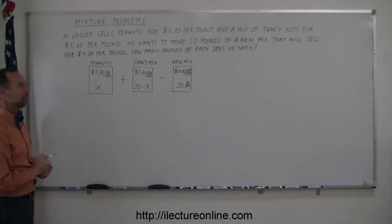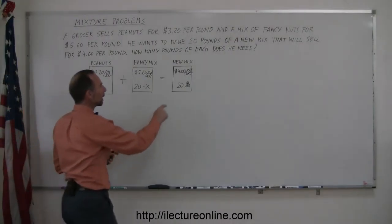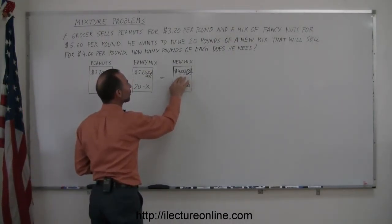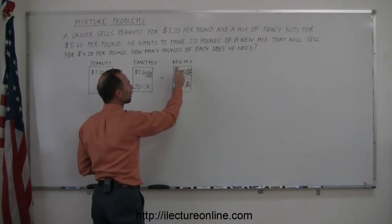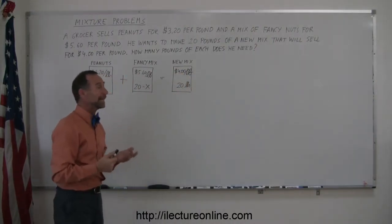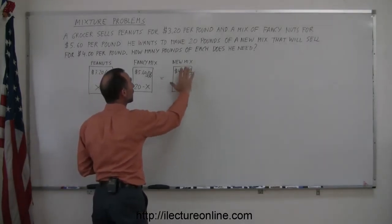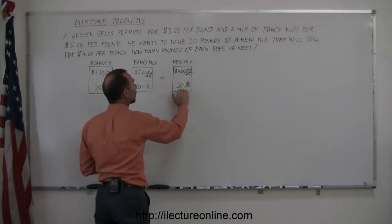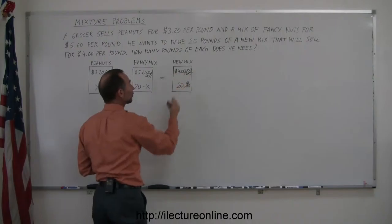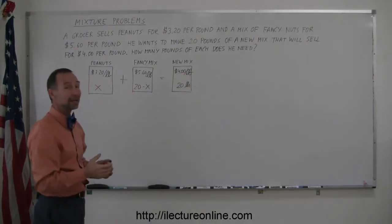Now, how do you solve that? Notice if you multiply these two together, 20 pounds times $4.00 per pound, the pounds will cancel out, you'll end up with 20 times 4, or $80.00. That will be the total value of the new mix. If you have 20 pounds of a mix that is worth $4.00 per pound, that whole mix together will be worth $80.00.